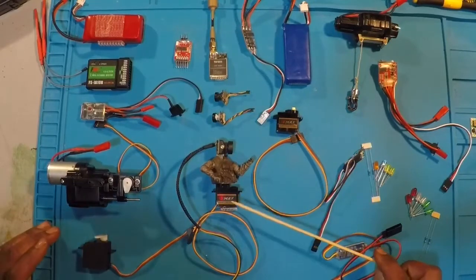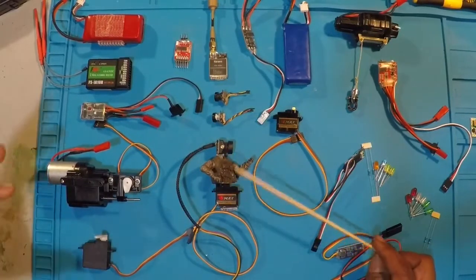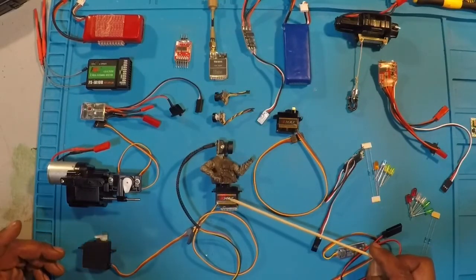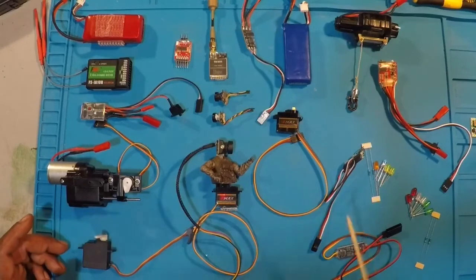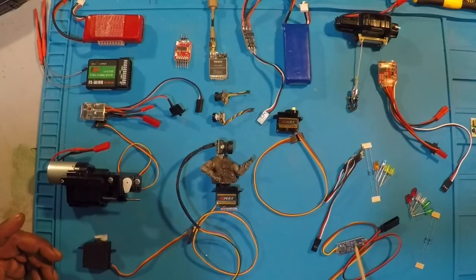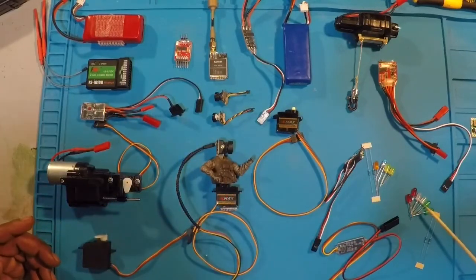On channel seven, we're going to have the servo with our main camera attached. It's going to be in the driver's seat. So we're going to have that controlled on channel seven. On channel eight, we're going to have our headlights and taillights. We're going to have a switch powered directly from the receiver that's going to turn our LEDs off and on.